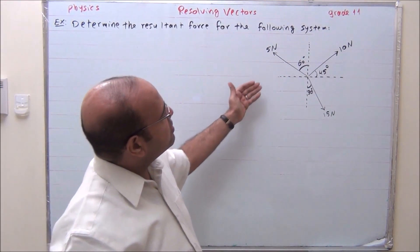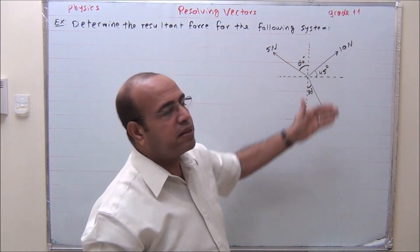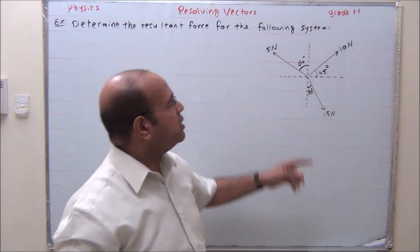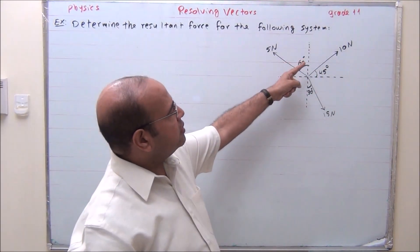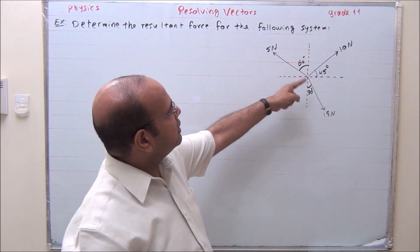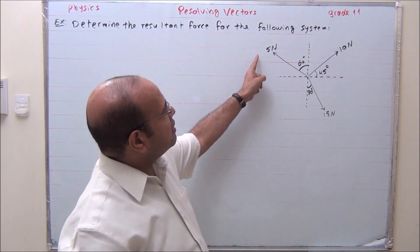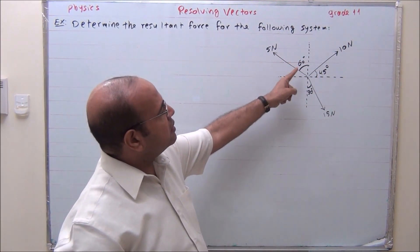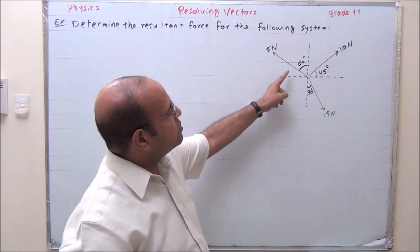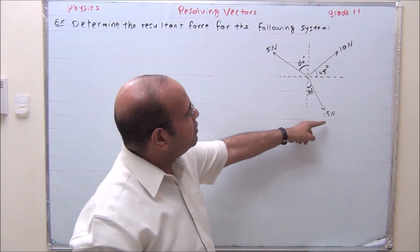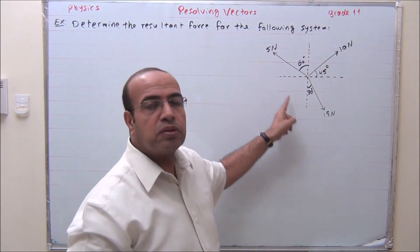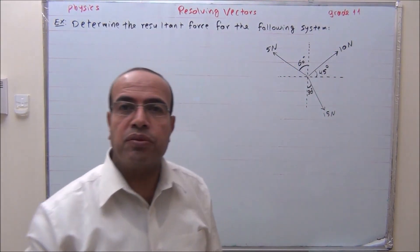We have here three coplanar forces: 10 Newton at 45 degrees, 5 Newton at 60 degrees to the north, and 15 Newton at 30 degrees to the south.